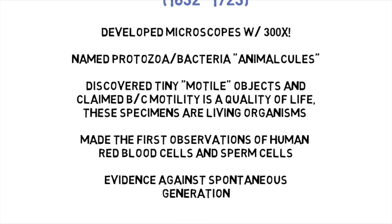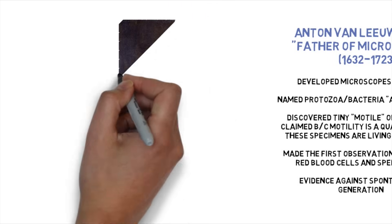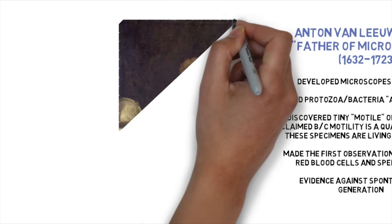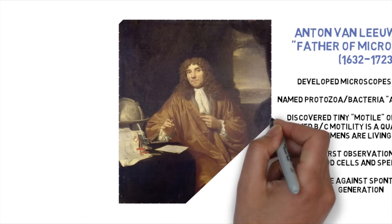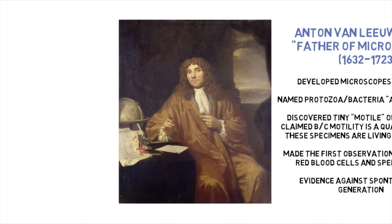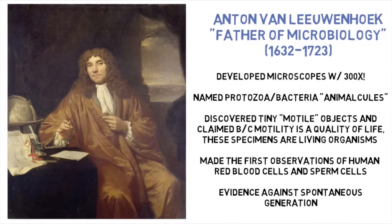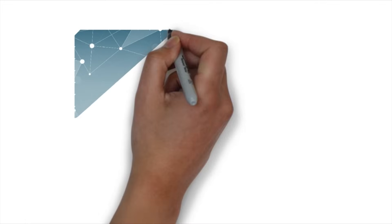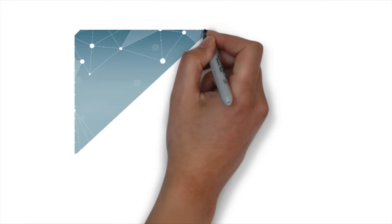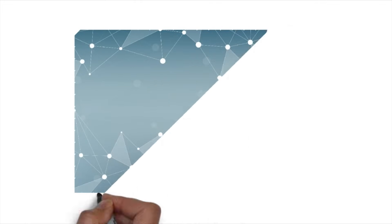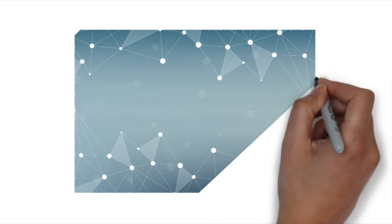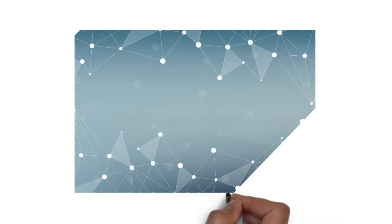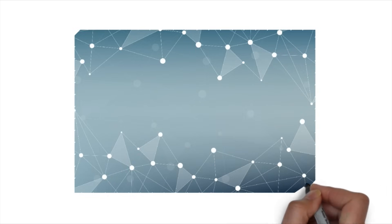This was extremely important because it was the first evidence against spontaneous generation — that cells were not just arising out of nowhere, but that they were coming from pre-existing cells, which we know to be true today. Following the work of Hooke and Leeuwenhoek, who were the ones who really solidified that cells existed, the cell theory itself didn't really come into existence until the mid-1800s.